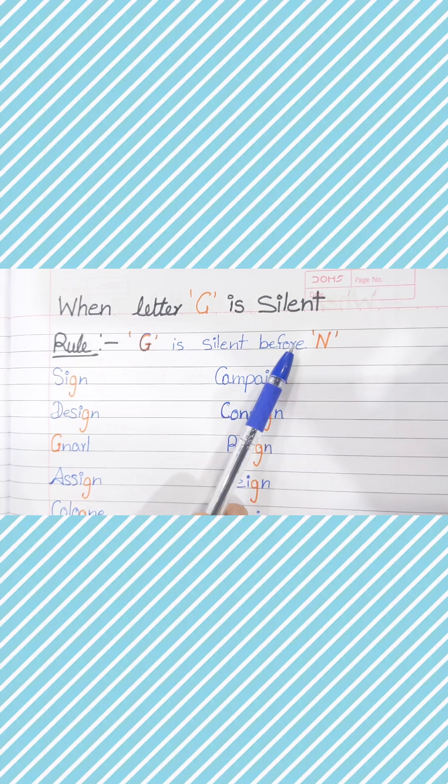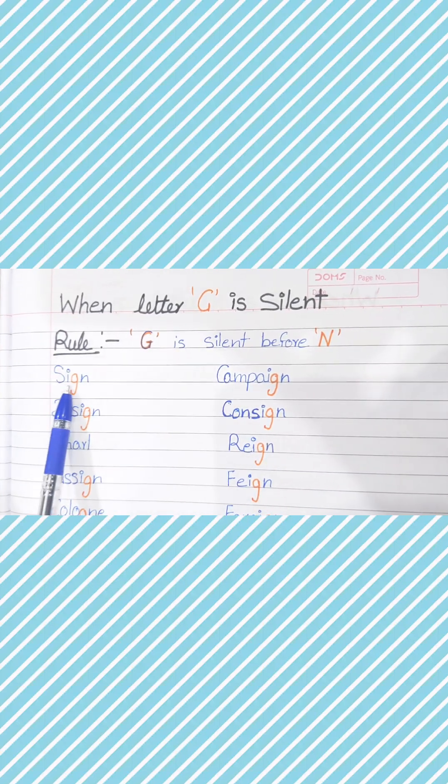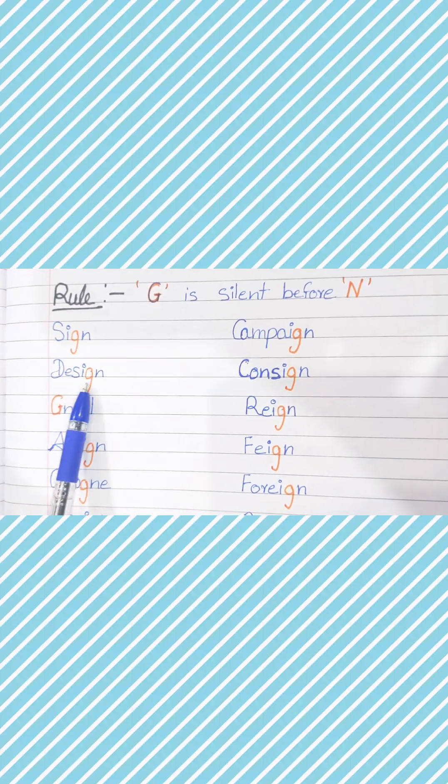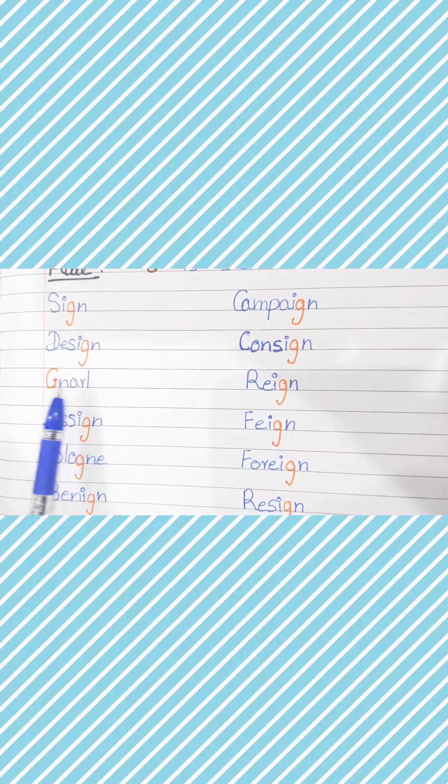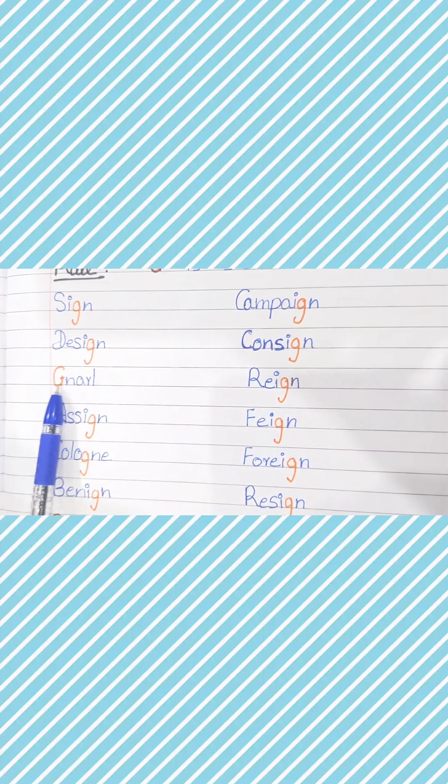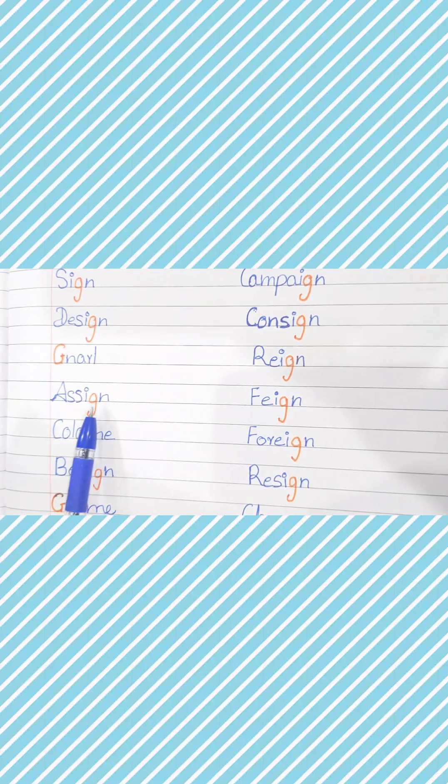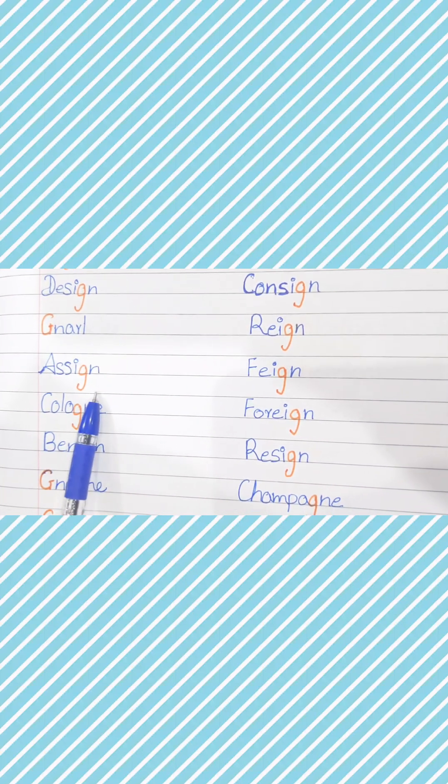When G is before N, G is silent. Sign - this is silent in this way because it is before N. Here you can see what is a sign. In sign there is N, so what is silent? G is silent.